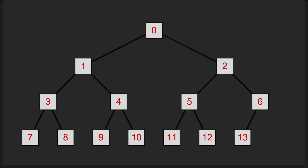If we swap out those indices for some sample F costs, you can see that the tree is structured by one very simple rule: each parent node must be less than both of its child nodes. So 4 is less than both 6 and 7, 6 is less than both 9 and 15, 7 is less than both 12 and 10, and so on.